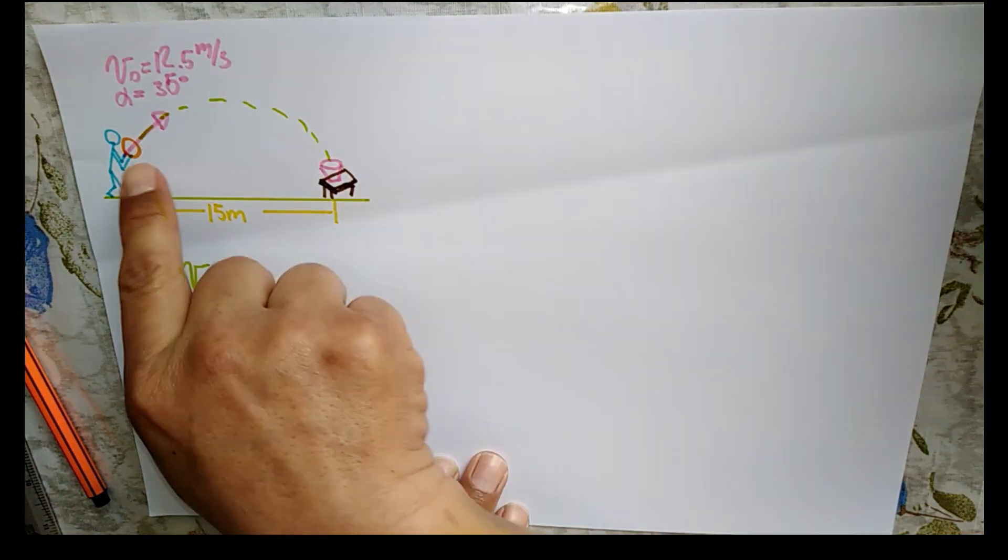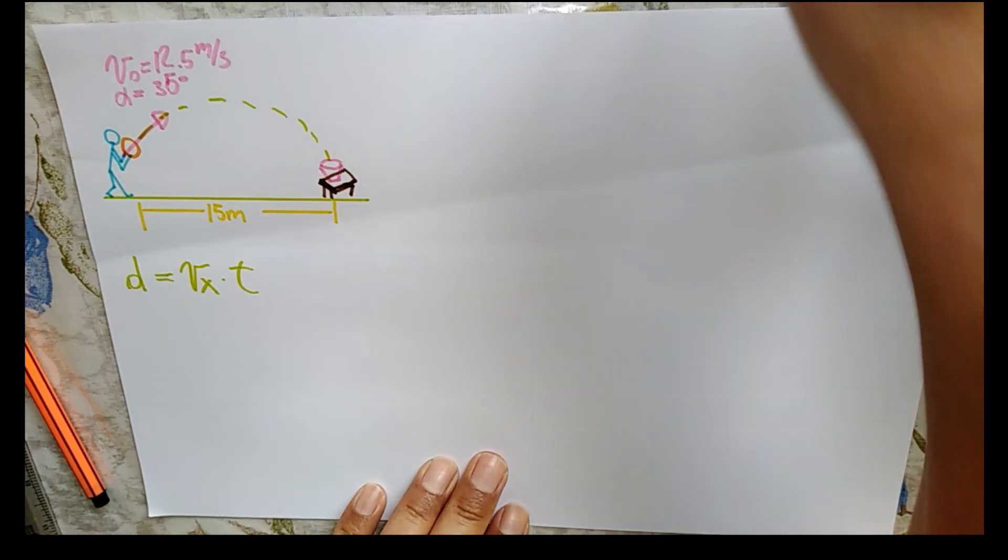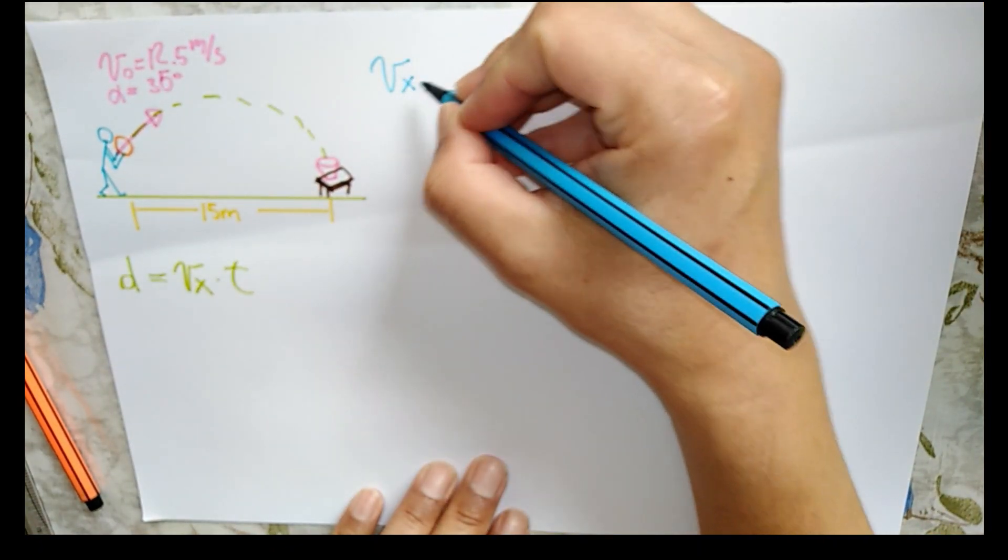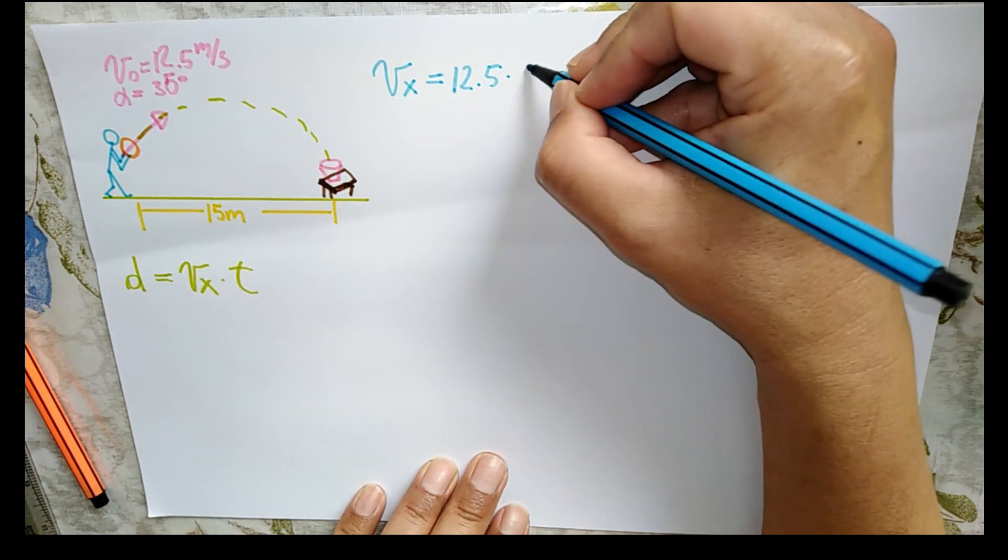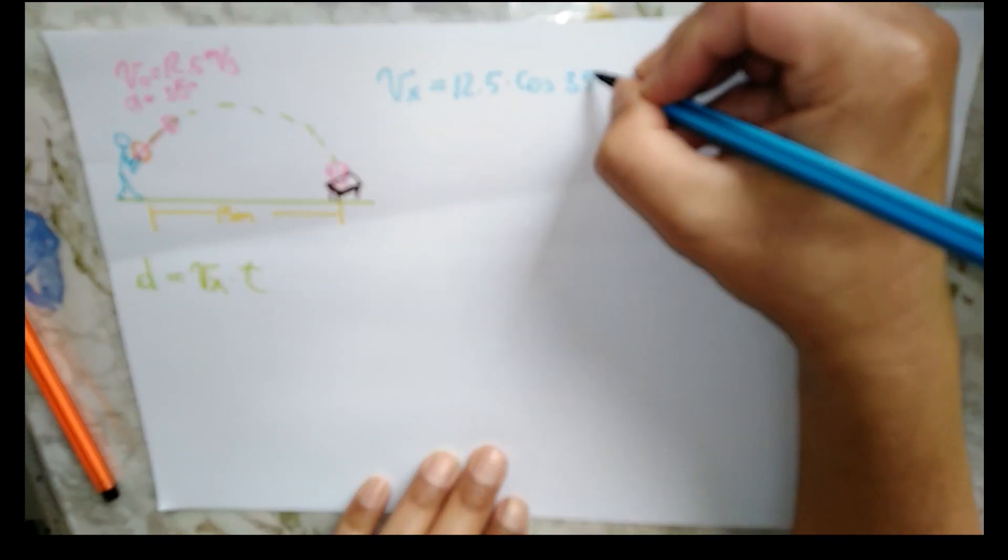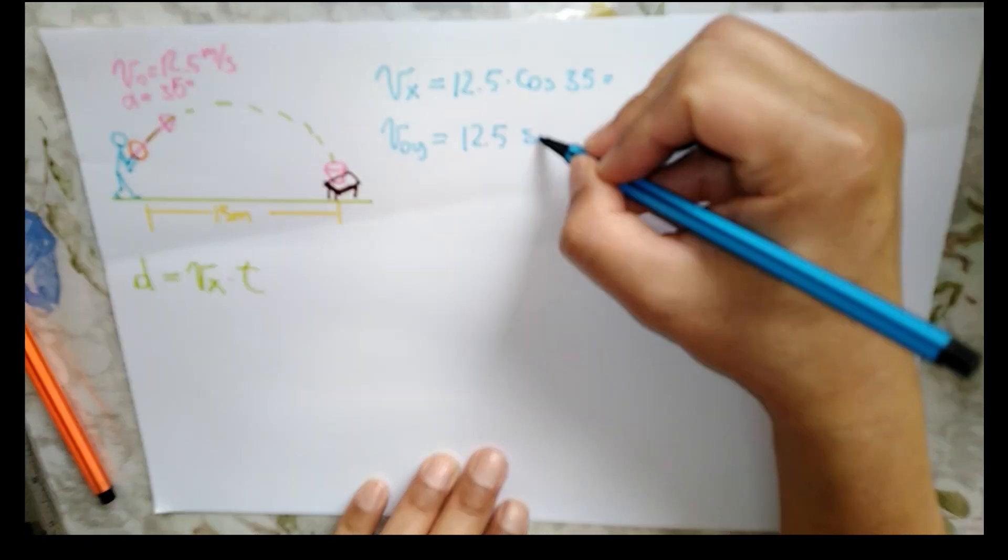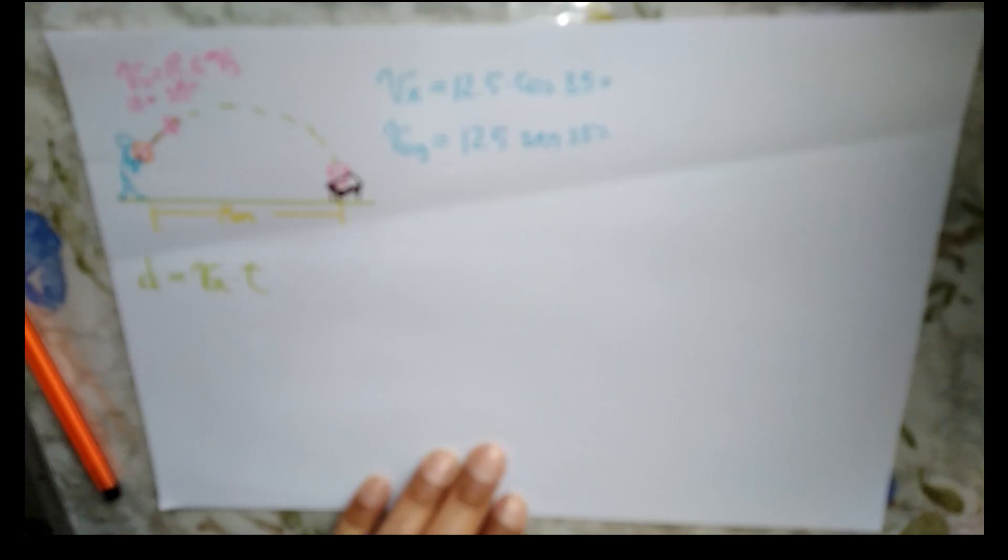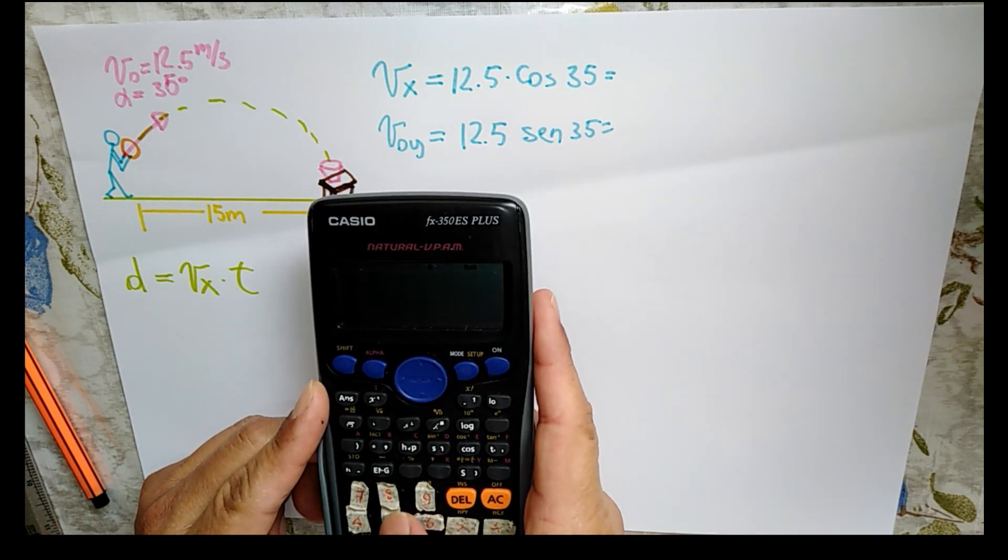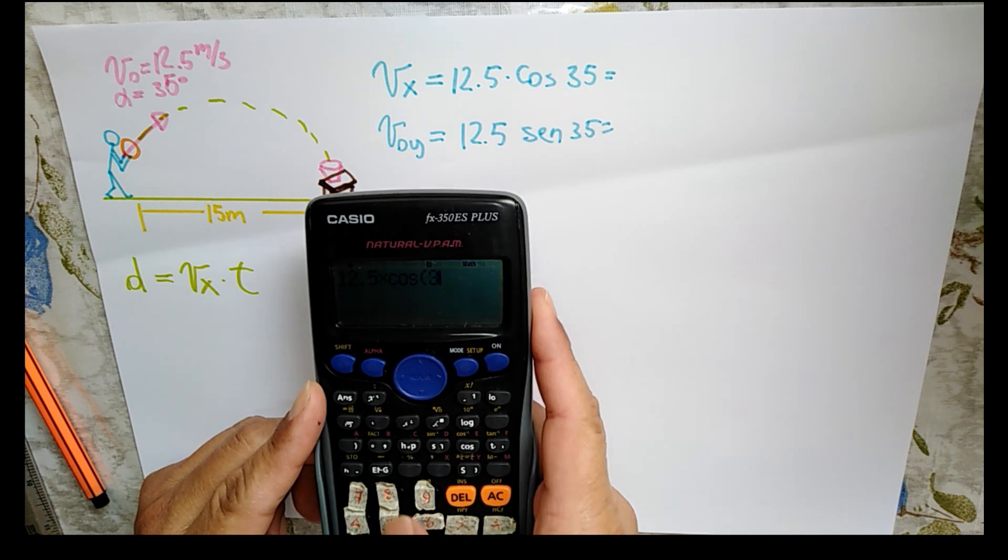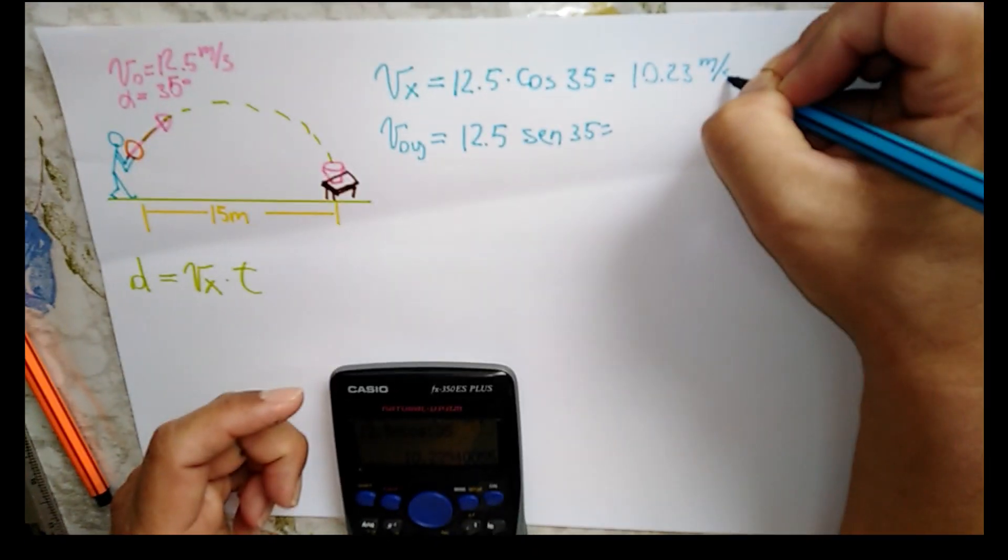Entonces, lo primero que voy a hacer es calcular las componentes de ese vector. La componente en X de la velocidad va a ser igual a la velocidad en sí, que es 12.5 por el coseno del ángulo de 35 grados. Entonces, ponemos 12.5 por el coseno de 35. Nos da 10.23 metros por segundo.